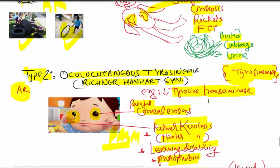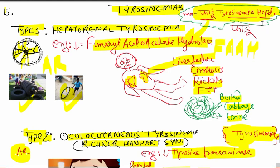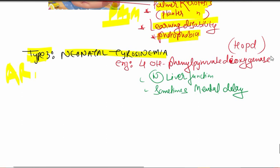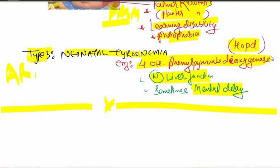The last word in our mnemonic is OPD — standing for hydroxyphenylpyruvate dioxygenase (HPPD), the deficient enzyme in type 3. Liver function is almost normal in this condition, and sometimes patients can have mental delay. That completes the mnemonic.